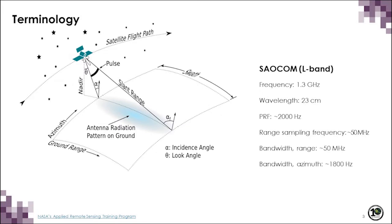To start, we'll cover some of the nomenclature in the SAR image. The satellite moves in the azimuth direction and emits electromagnetic pulses at a given frequency. In the case of SAOCOM, this would be 2000 Hz, also known as the pulse repetition frequency or PRF. This electromagnetic pulse travels at the speed of light, interacts with targets on the Earth's surface, and the energy is then in part returned to the satellite, forming an image. SAOCOM is a SAR that operates at L-band with a carrier frequency of 1.3 GHz, equivalent to a wavelength of 23 centimeters.